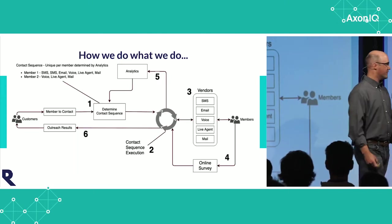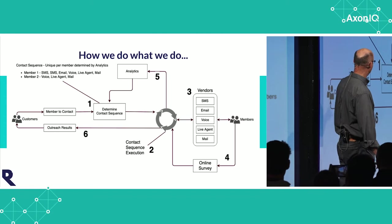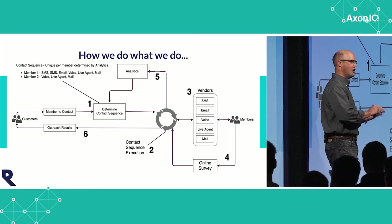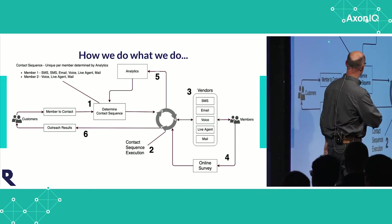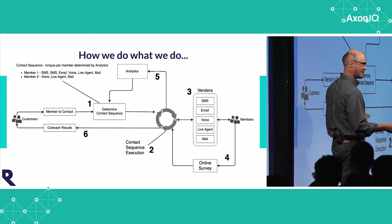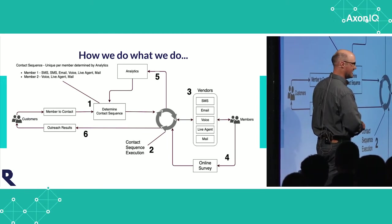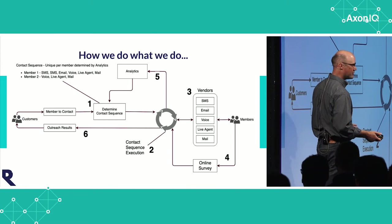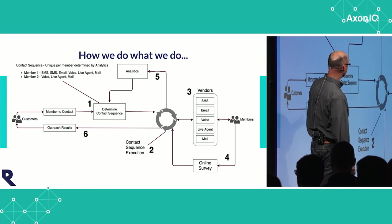So how do we do what we do? First, we try to contact people. From our customer — whether doctor or health plan — they send us who they want to talk to, along with a defined program, like talking to somebody about their health condition or having them fill out a survey. We bring them in the door, usually via a big file — everybody loves file transfer in the healthcare space. We then determine how we want to talk to them using our analytics, and set up a unique contact sequence defining the order of channels we use.